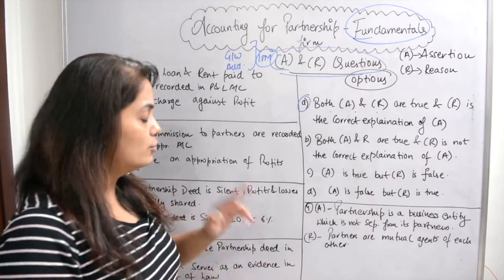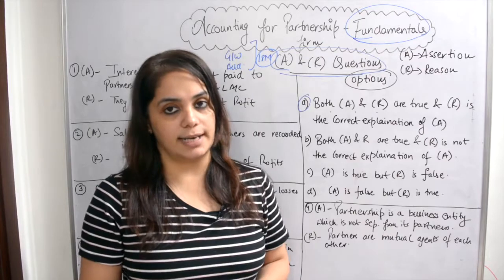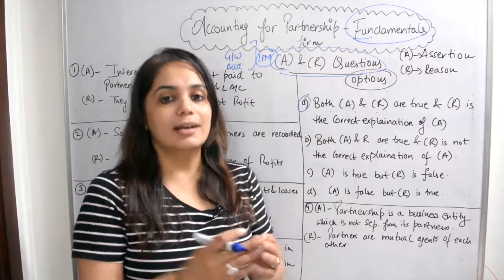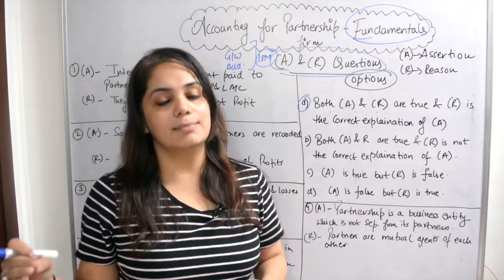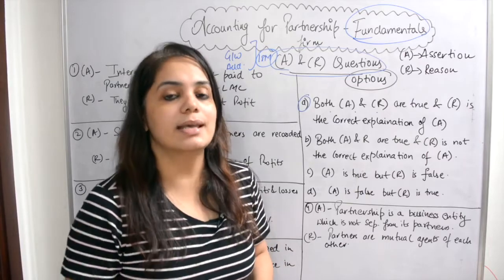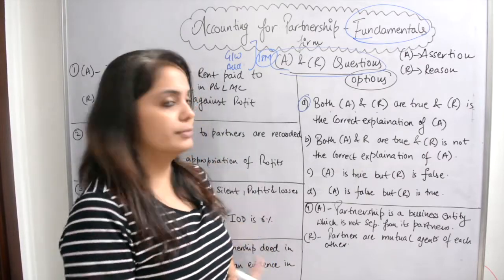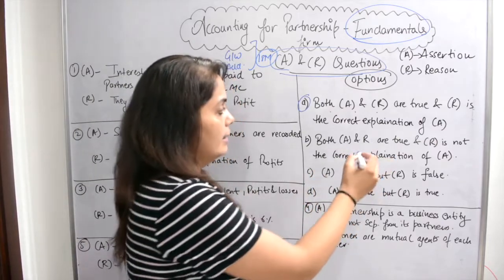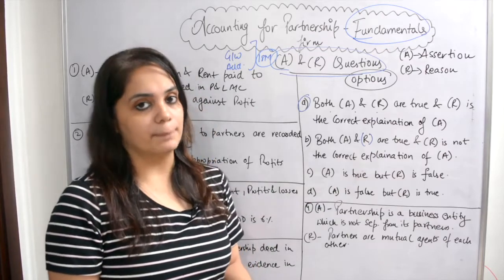So basically, two statements will be given — assertion and reason. If both statements are true, we check whether the reason correctly explains the assertion. Option two: both A and R are true, but R is not the correct explanation of A.